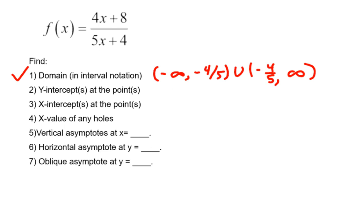Number 2 says to find the y-intercepts at a given point. So we want to find the points, the x, y ordered pairs, where the function will cross the y-axis. Now since this is a function, it should only have one y-intercept. And anywhere you go on the y-axis, x is always 0. So all we need to do is evaluate f of 0.